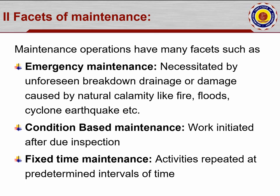Next is Fixed Time Maintenance — activities repeated at pre-determined intervals of time. For example, if a road is being laid, maintenance may be due after another 5 to 10 years, or maybe after 4 years, depending on the type of highway. They may have overlay work and painting, etc. That falls under Fixed Time Maintenance.